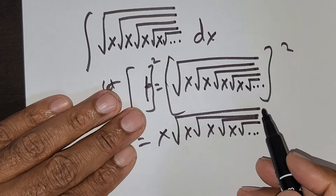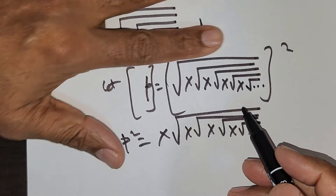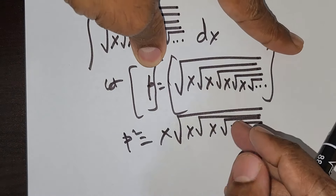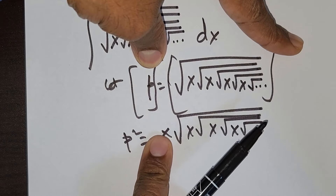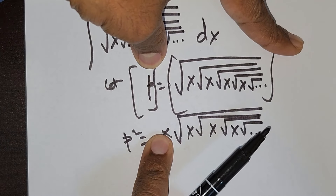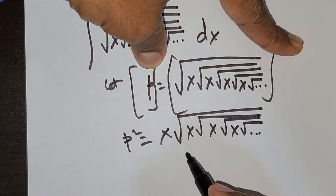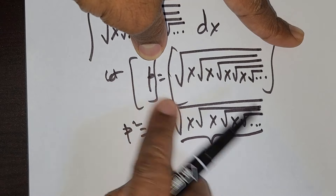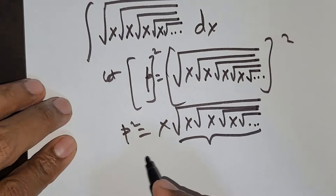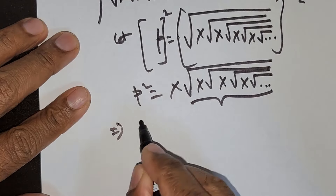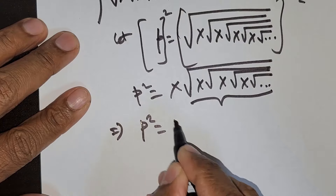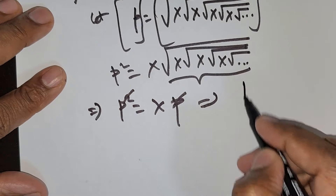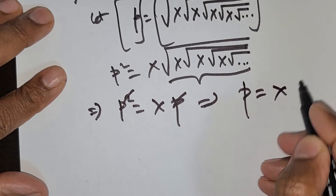Now, what is this? We started out by letting P equal to this nested expression. So I can actually replace this quantity with P. This would mean P squared is equal to x times P. So P gets cancelled, giving me P is equal to x.